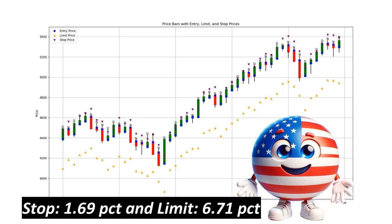We calculate a backtest for trading the E-mini S&P 500 using futures contracts. This is done by selecting different limit orders and stop losses for the asset, and selecting the combination which gives the best expected value. This backtest provides us a stop loss of 1.69%, a limit order of 6.71%, and a maximum contract risk, so that if the position gets assigned, the stop loss can be used without exceeding the maximum risk.